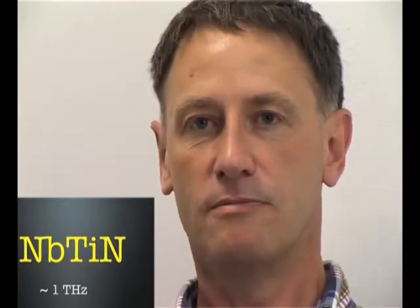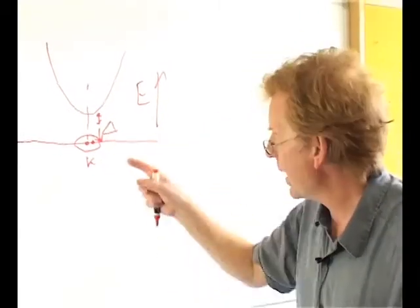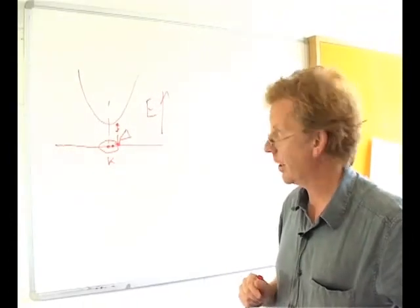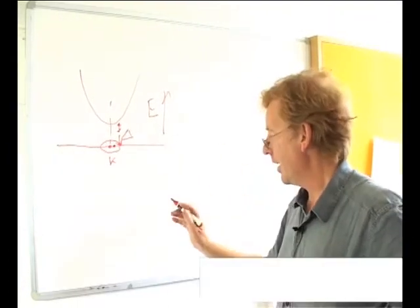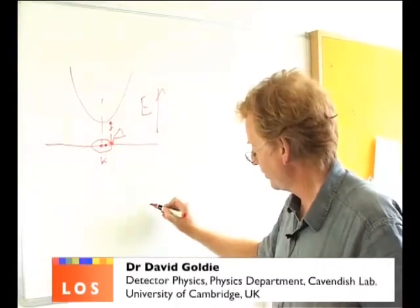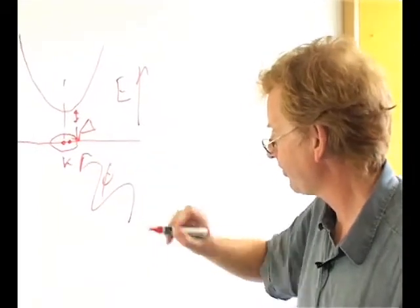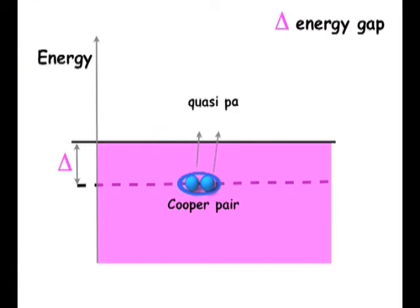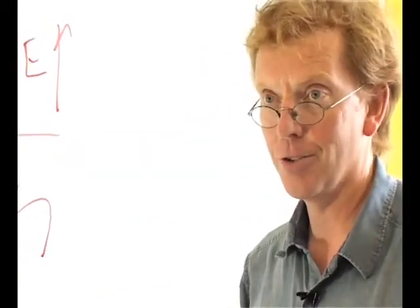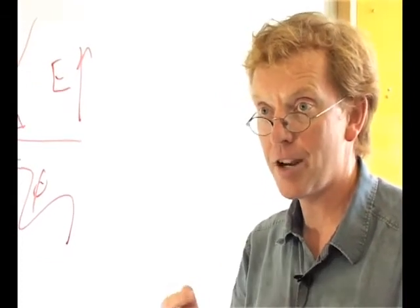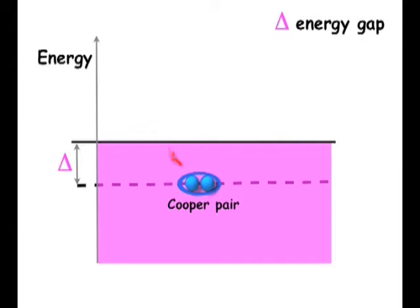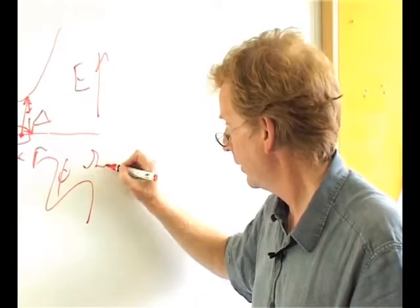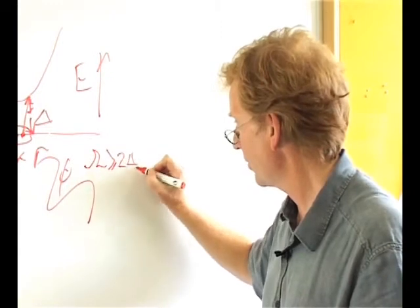Now we must think about how we actually create excitations in the superconducting case. The first thing to think about is phonons, the lattice vibrations in the system. If the phonon has sufficient energy, it can break the Cooper pairs and create excitations. Now, it's important to realize that the Cooper pair is two paired electrons, so that breaking up the Cooper pair means creating two quasiparticle excitations.